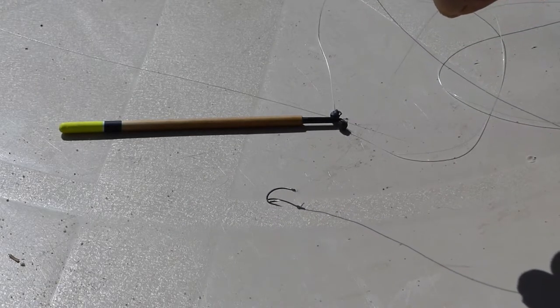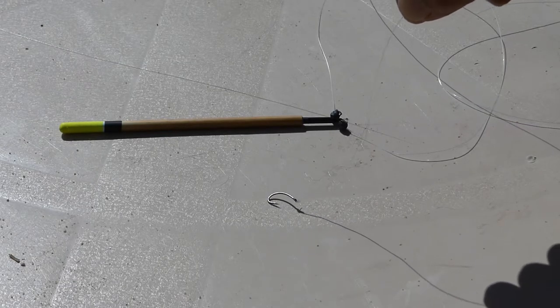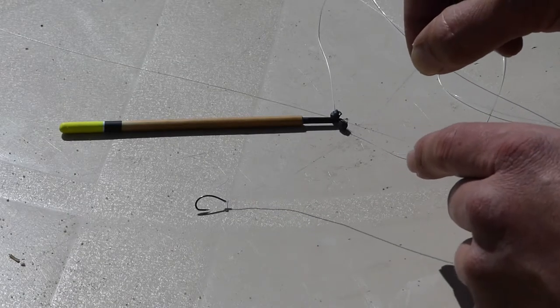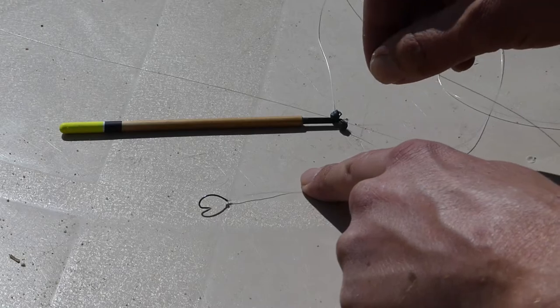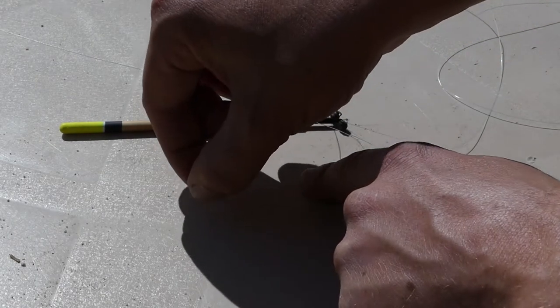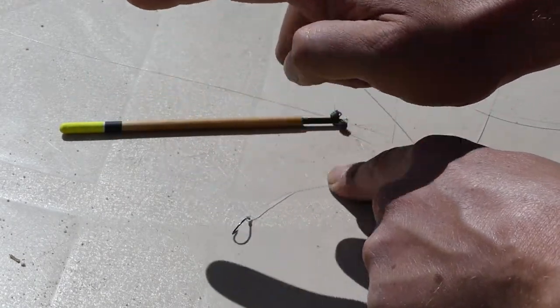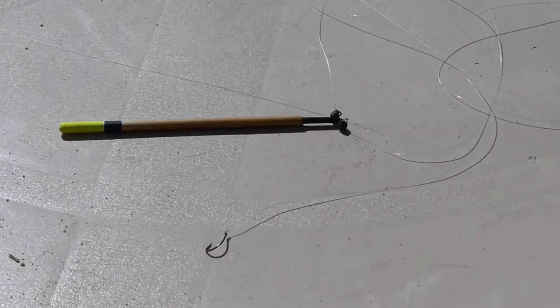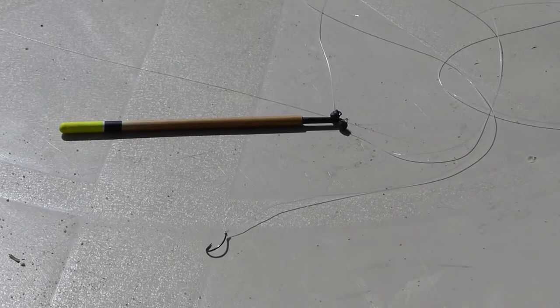You can obviously do a few different rigs - shirt button style, or even a lift bite where you'll have a large swan shot sitting here. So when the fish lifts up it will take that weight off and the float will actually lift up. But for all intents and purposes of the easiest way to fish with the best presentation, that's your rig really.